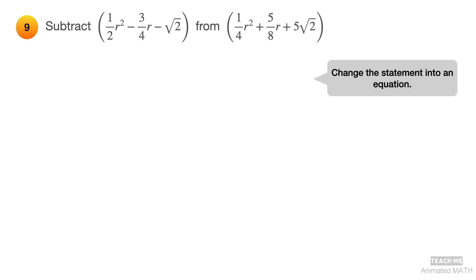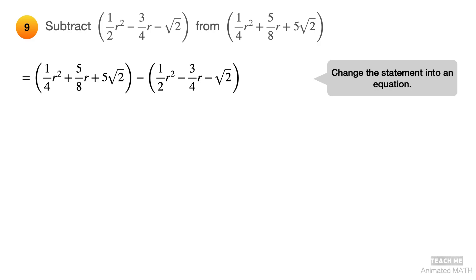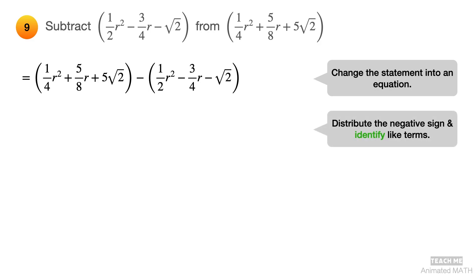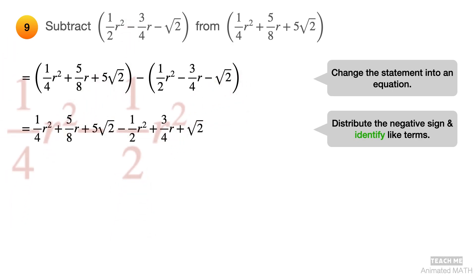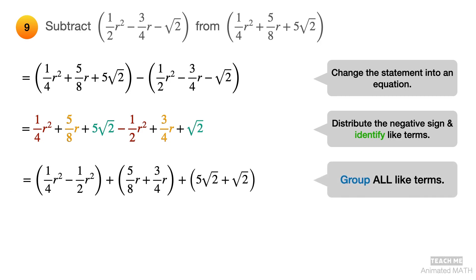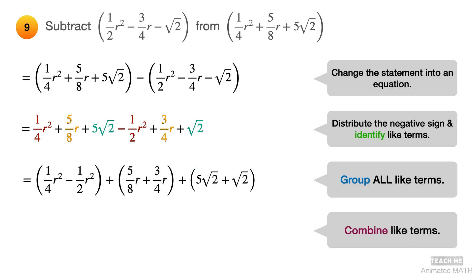Change the given statement into an equation. This step is more about reading comprehension than calculations. Distribute the negative sign and identify like terms. Next, group all like terms and arrange them in standard form. Group the terms with r squared. Group the terms with r. Group the constants. Last, combine like terms using addition and subtraction. And the final answer is negative one-fourth r squared plus 11 over 8 r plus 6 square root of 2.